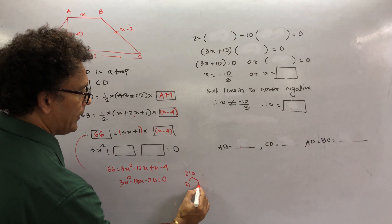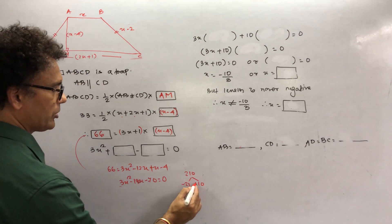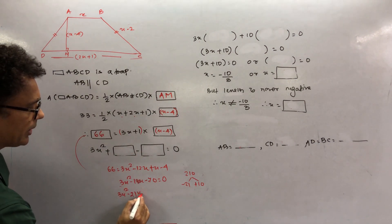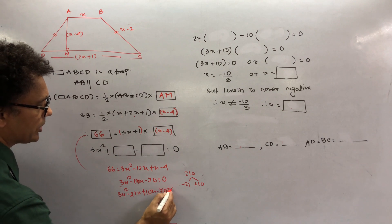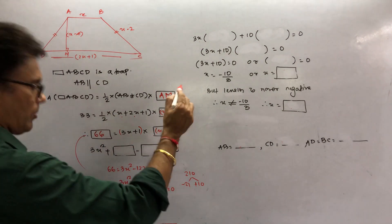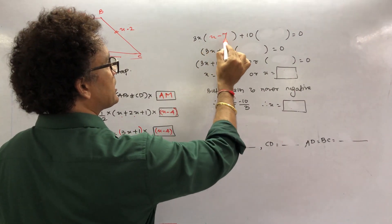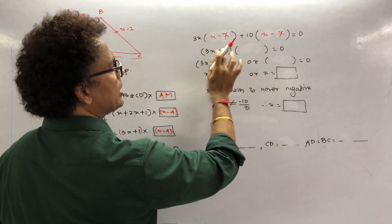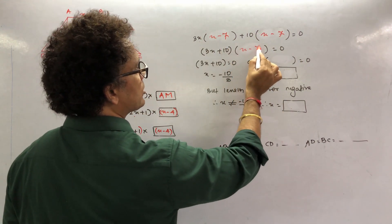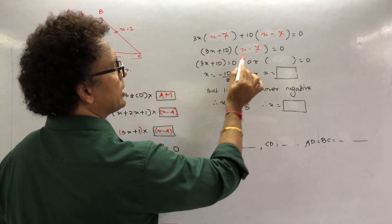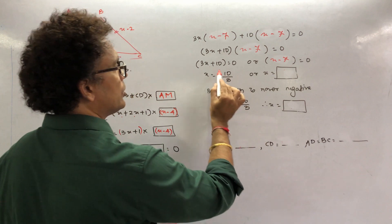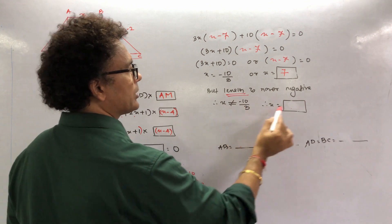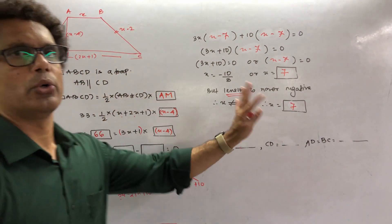Opening the brackets: 66 = 3x² - 12x + x - 4, giving 3x² - 11x - 4 - 66 = 0, so 3x² - 11x - 70 = 0. Factorizing: 3 × 70 = 210. Terms: -20x + 10x work. So 3x² - 20x + 10x - 70 = 0, giving x(3x - 20) + 10(... Hmm, regrouping: 3x(x - 7) + 10(x - 7) = 0, so (x - 7)(3x + 10) = 0. Since length cannot be negative, x = 7.